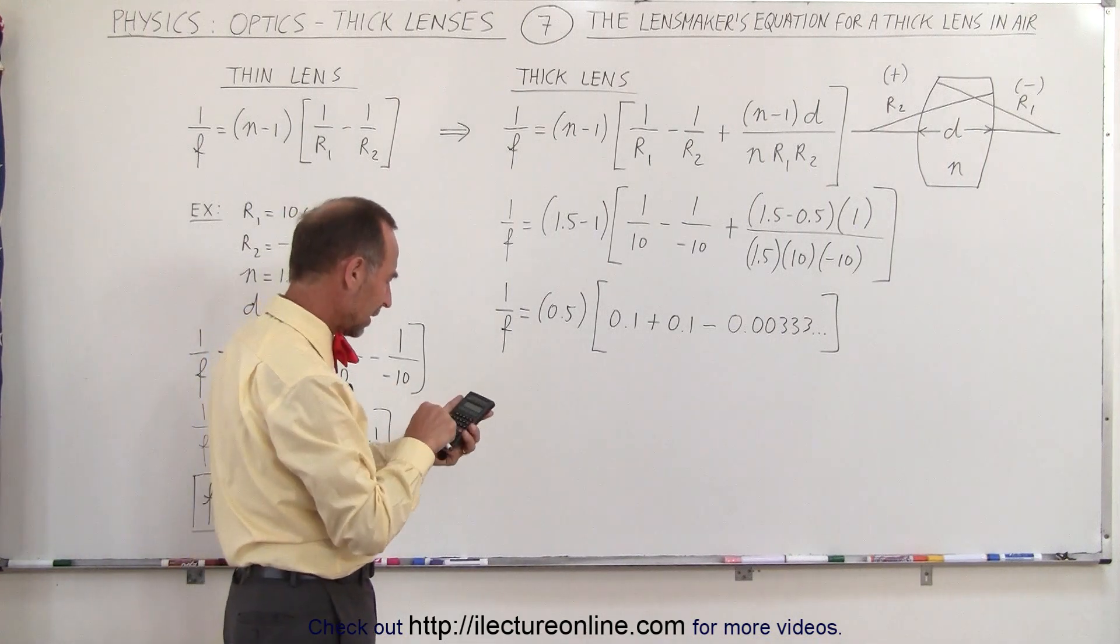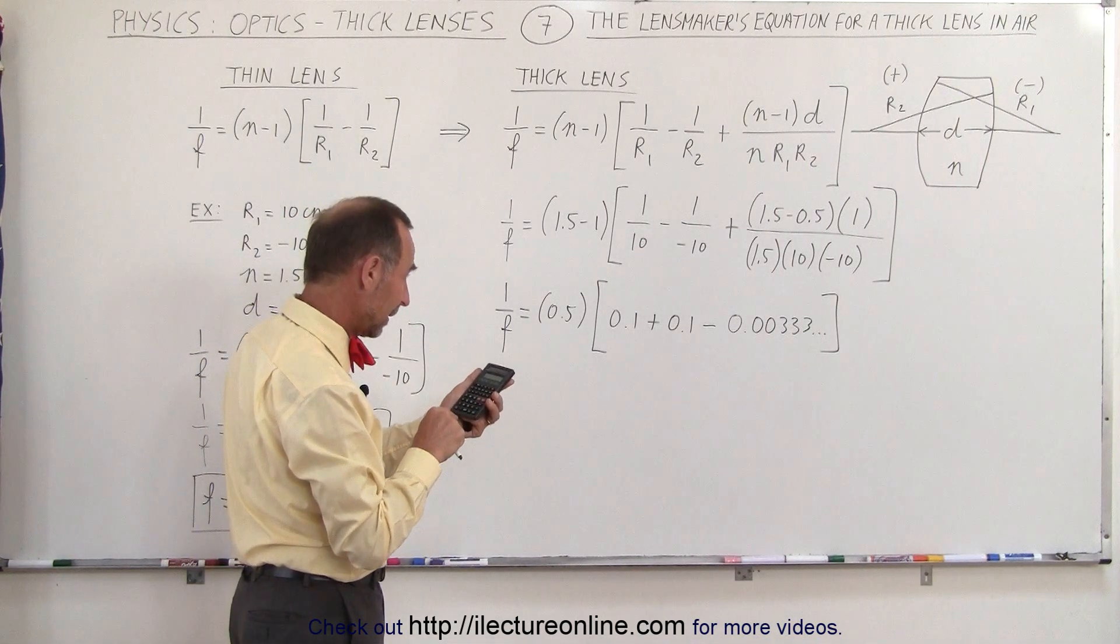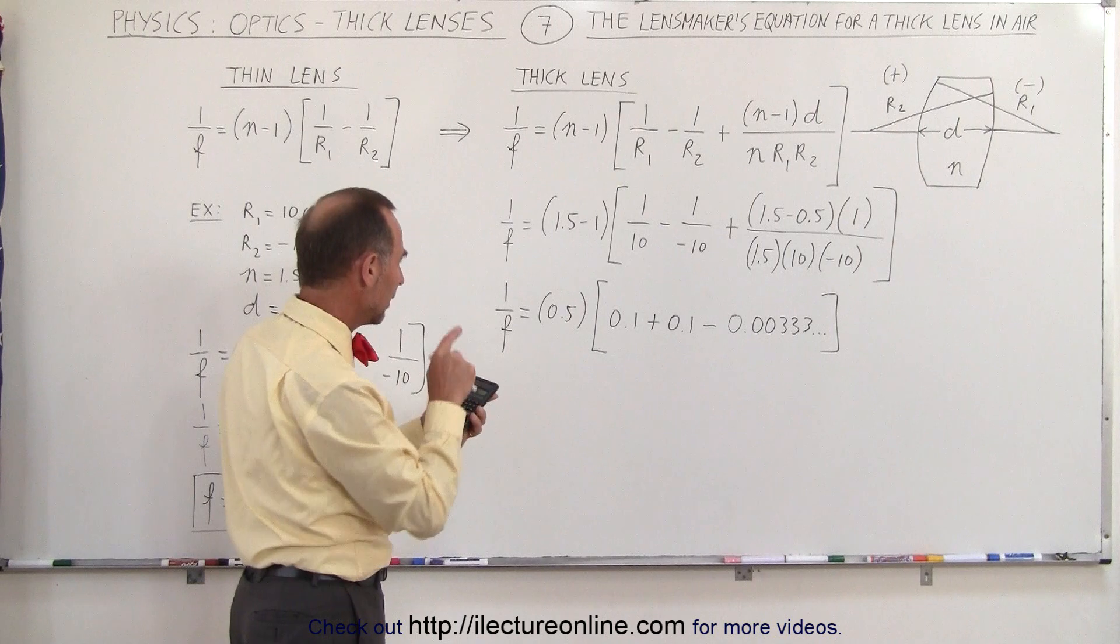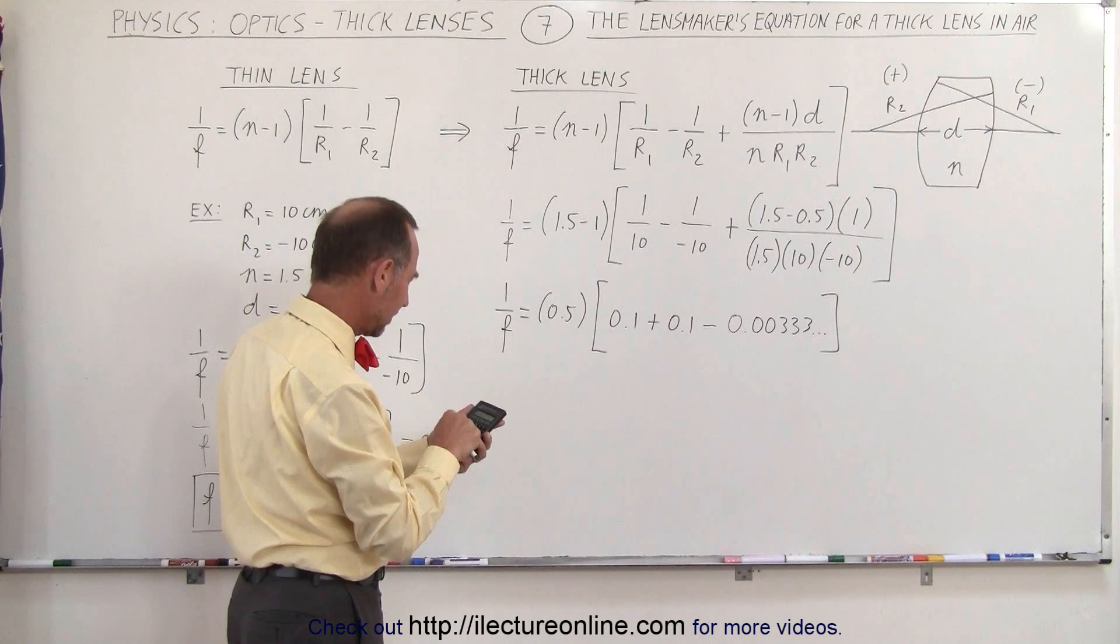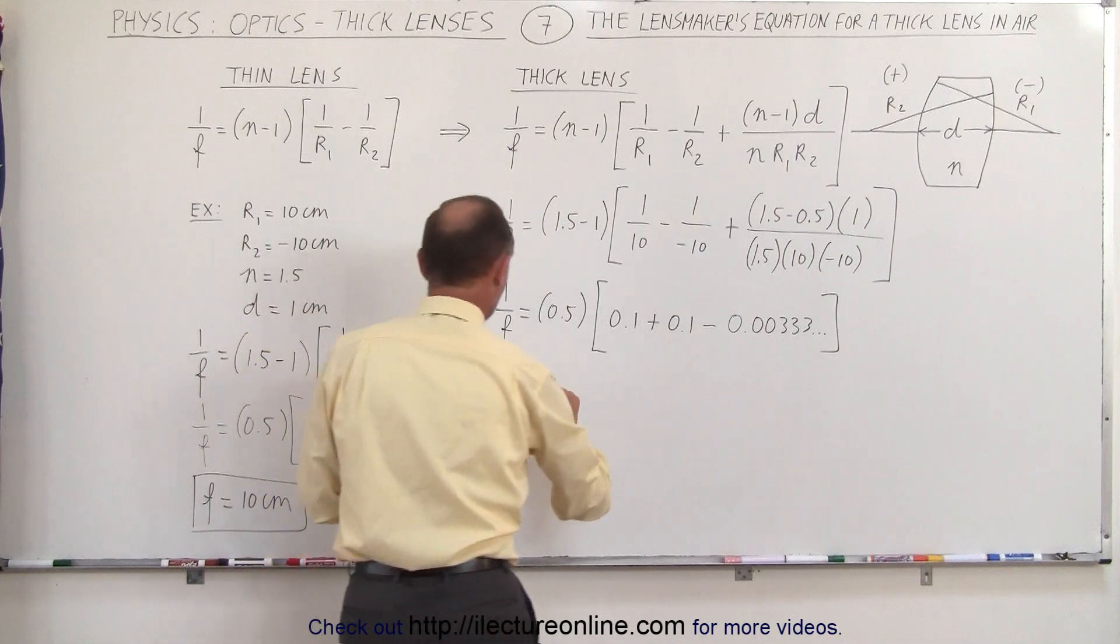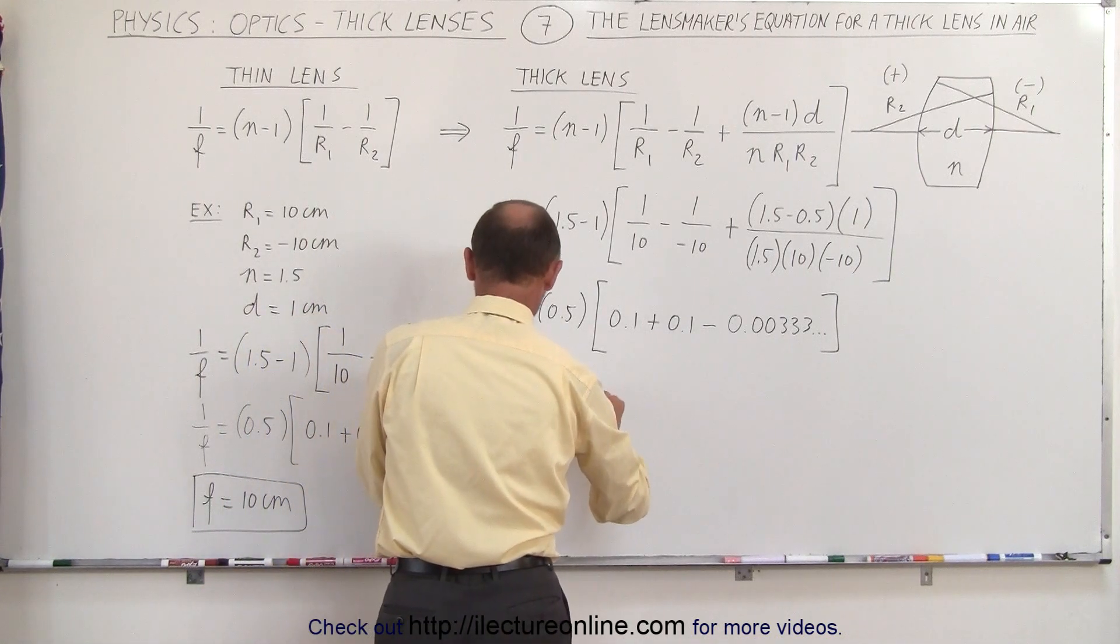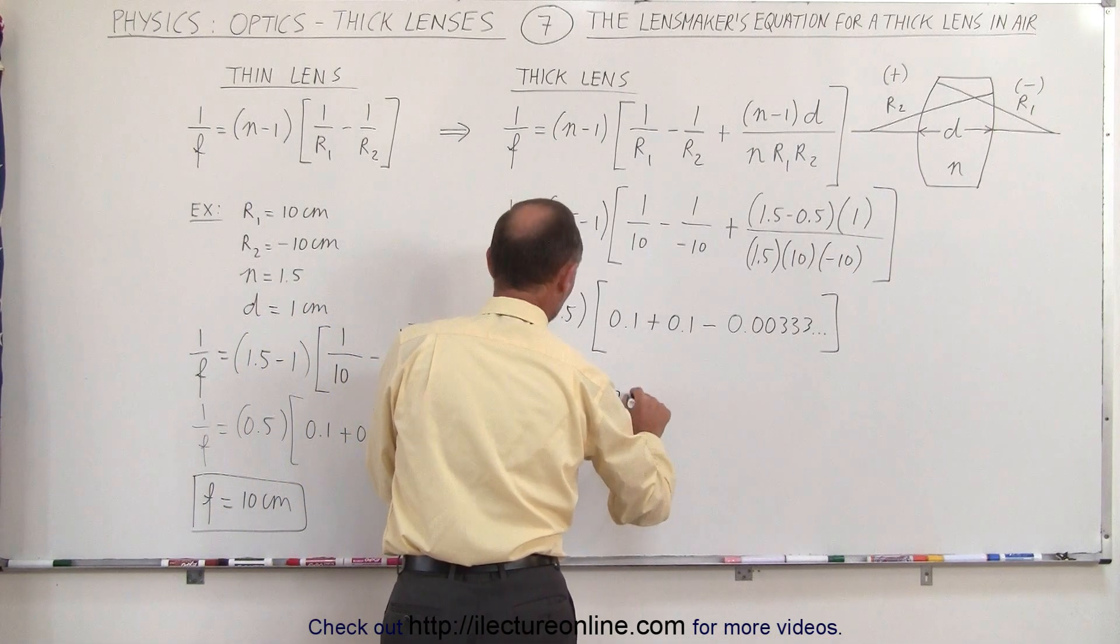Now we plug that in there, so we make that a negative plus 0.2 multiplied times 0.5, and then take the inverse of that, and we get F is equal to 10.17 centimeters.